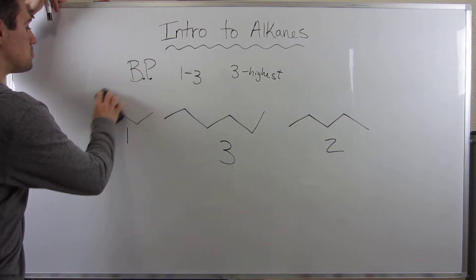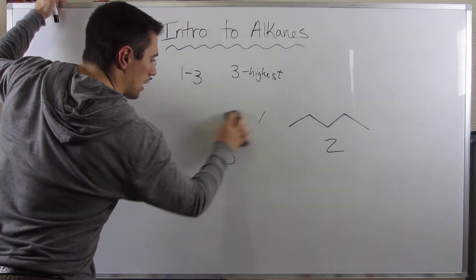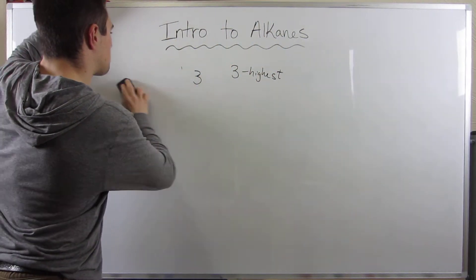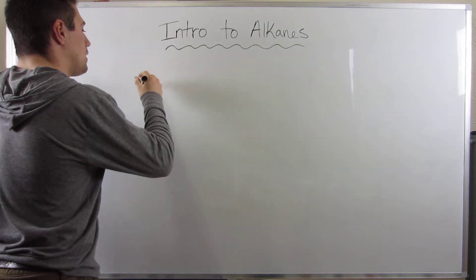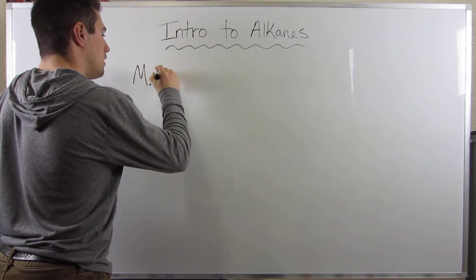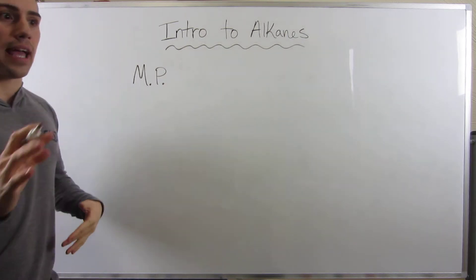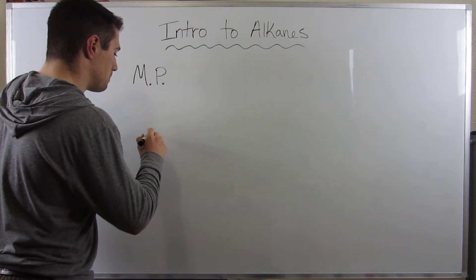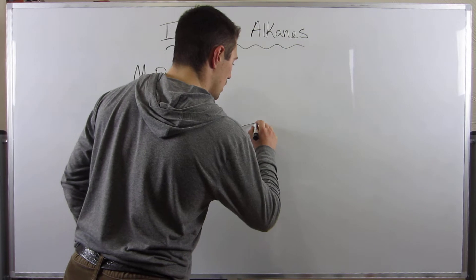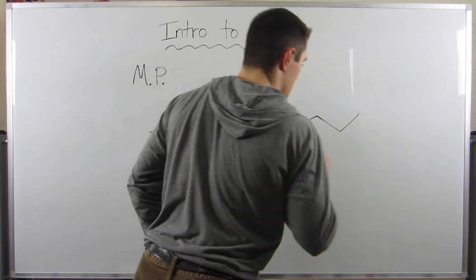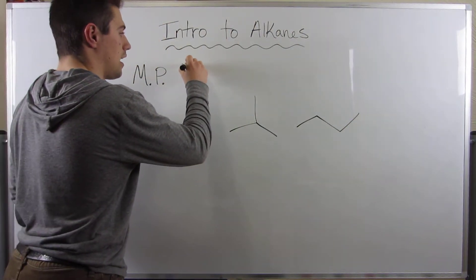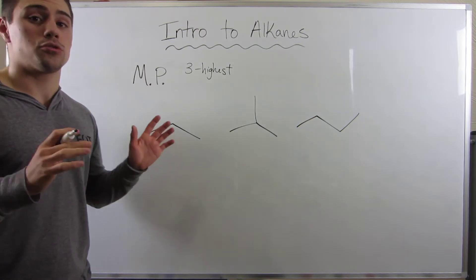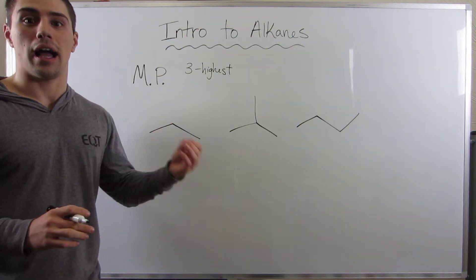Not too bad. So remember: look for the highest molecular weight molecule — he gets the highest. If there's ever a tie, go with the straight chain and make sure the branched structures come last. That was boiling point — it's really not hard at all. Now let's talk about melting point super quick, and then we'll get into some common naming. Melting point is slightly different — it still depends on molecular forces, but there's a little bit of a twist. Again, you're going to try and find the largest molecule and give it the highest melting point.